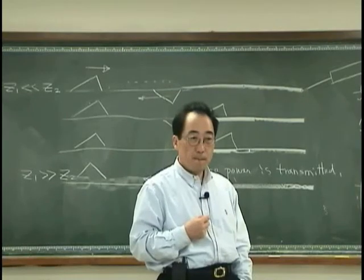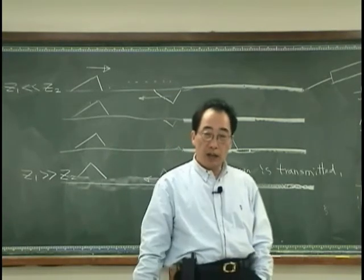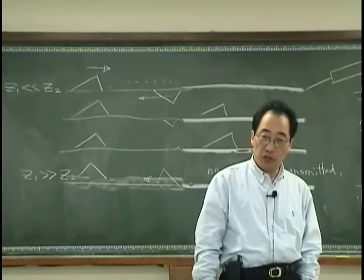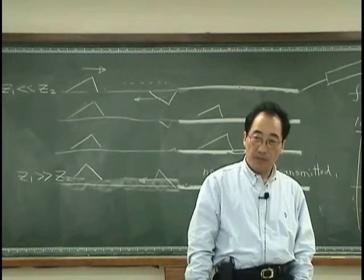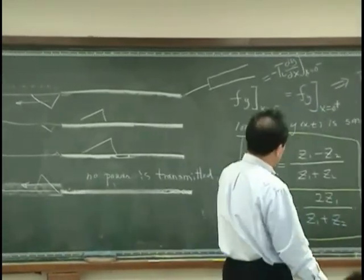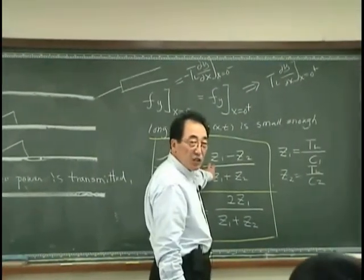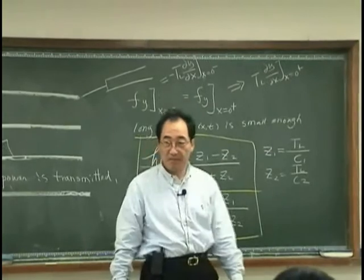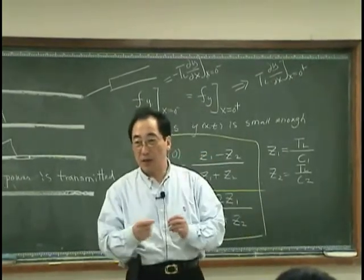Alright? What kind of a transmission line we want to have? Maybe the line that has equal impedance, then we would not have any reflection.